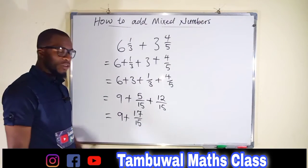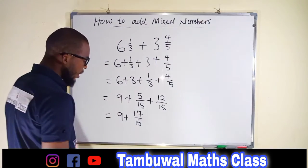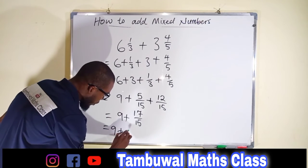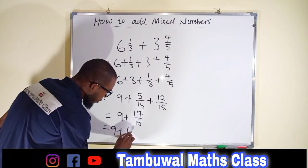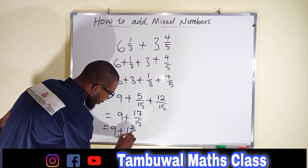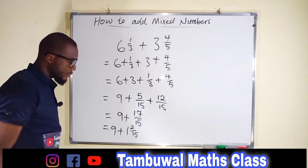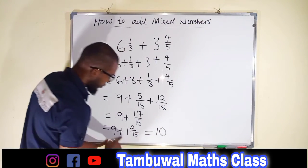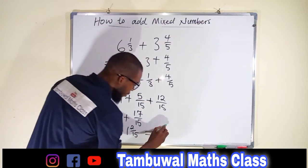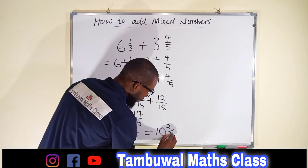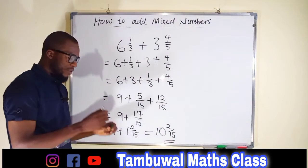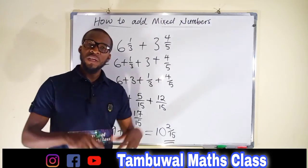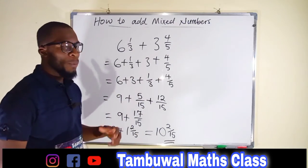15 can go into 17 one time, with 2 left over. So this equals 9 plus 1 and 2 over 15. Our final answer is 10 and 2 over 15, because 9 plus 1 is 10. And this is how to add mixed numbers together without transforming them into improper fractions.